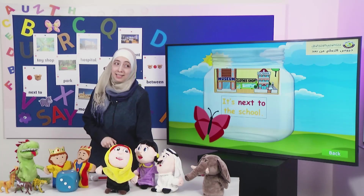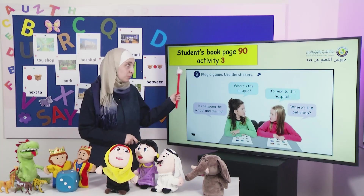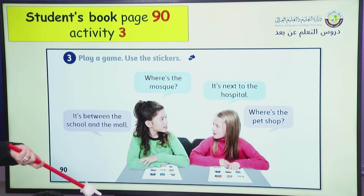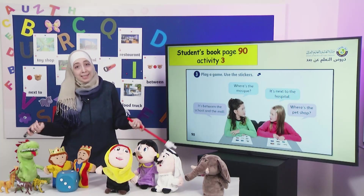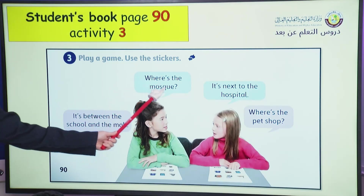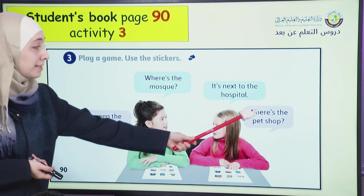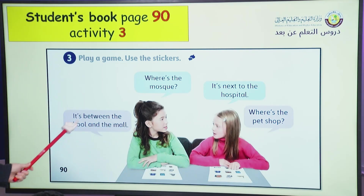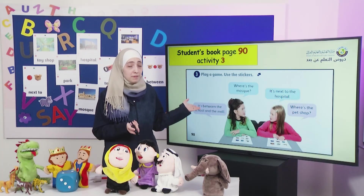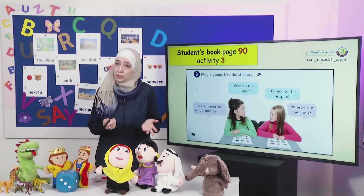That's great, dear students. Now let's move to Activity 3 in our students' book, page 90. Look, we have two girls. What are they doing? Yes, they are playing a game about the places. Where is the mosque? It's next to the hospital. Where is the pet shop? It's between the school and the mall. You can practice this activity with your family using the stickers at the back of your student's book.